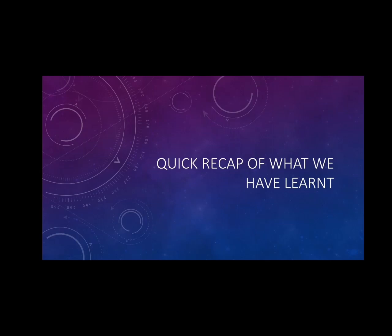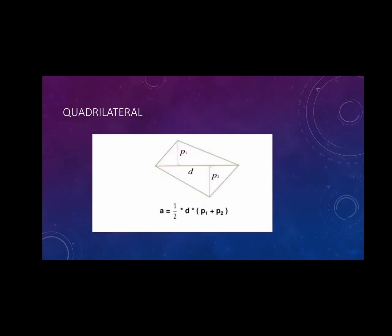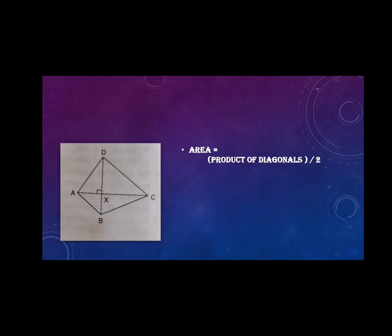The first one is quadrilateral. This quadrilateral is half into one diagonal into sum of these two perpendicular drawn from the remaining two vertices. When two diagonals of a quadrilateral is given, the area is half into product of the diagonal.